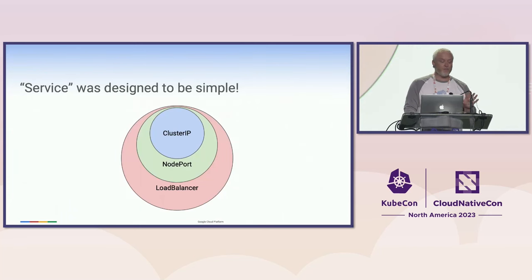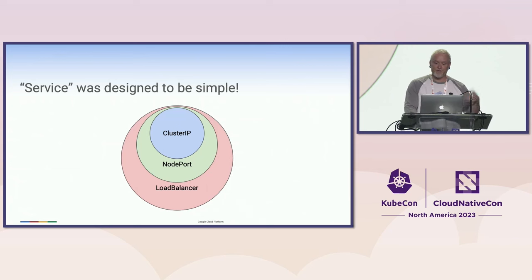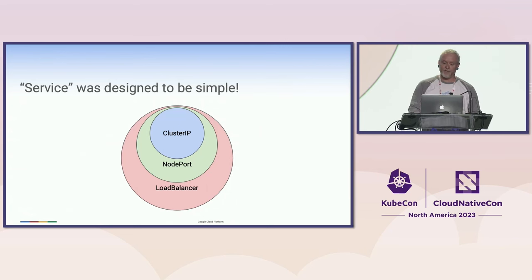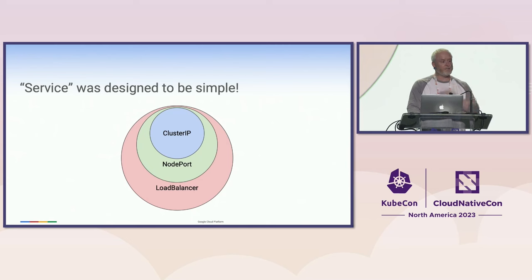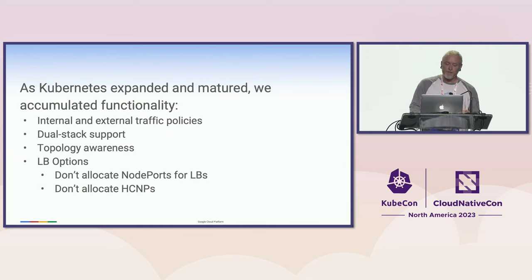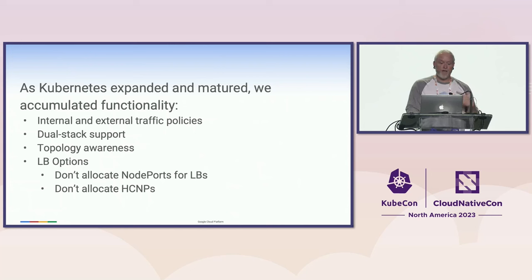Service was designed to be simple. We had a model we designed for the way services work. But you know what they say about good intentions. As Kubernetes has expanded over 10 years, we have accumulated a lot of functionality — all sorts of stuff that has grown, more knobs, more sophistication. That's code for complexity.